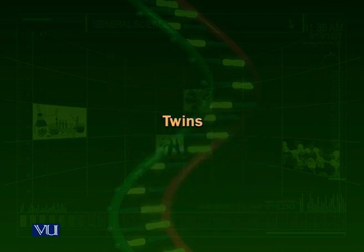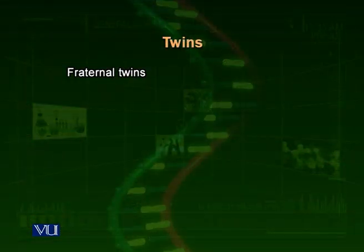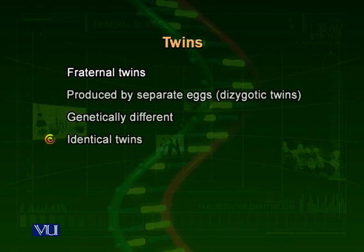Now, the last topic for today: twins. There are two types of twins. One is called fraternal twins, and the other are called identical twins.